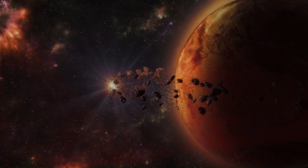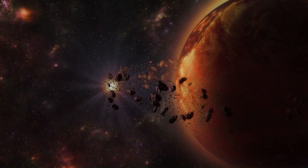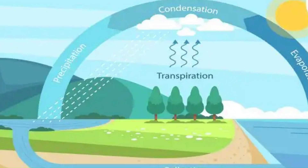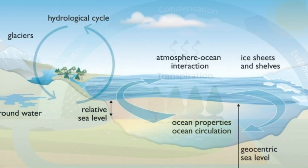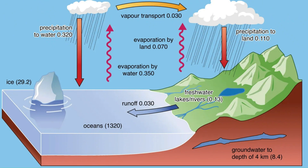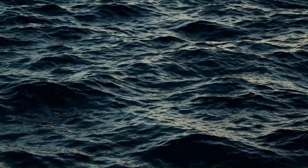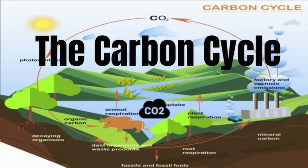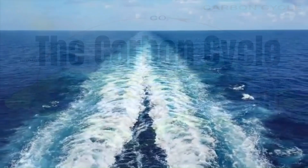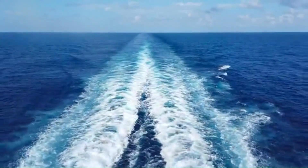Once liquid water formed, it began to accumulate in low-lying areas, creating the Earth's first oceans. Over time, the water cycle — evaporation, condensation, and precipitation — became established, regulating the distribution of water around the planet. The Earth's oceans have played a critical role in stabilizing the planet's climate, absorbing heat, and regulating the carbon cycle. Over time, the salinity of the oceans increased due to the dissolution of salts from rocks, and life began to emerge in the oceans.